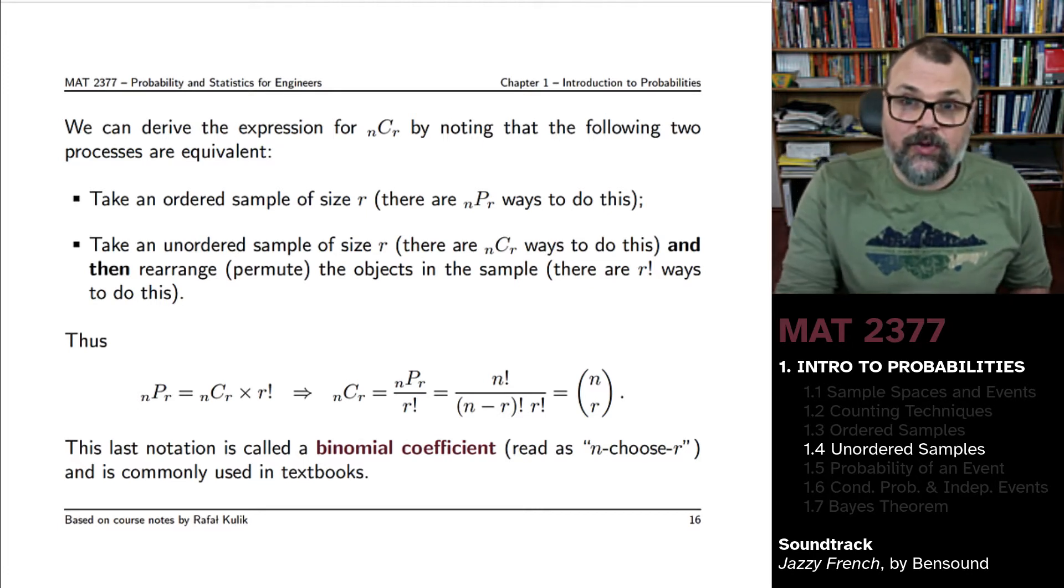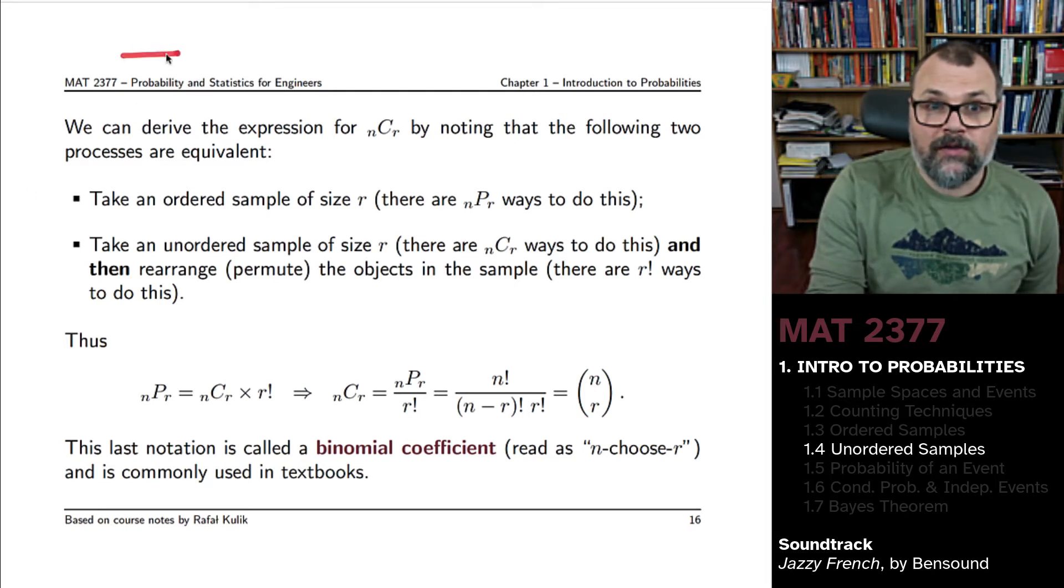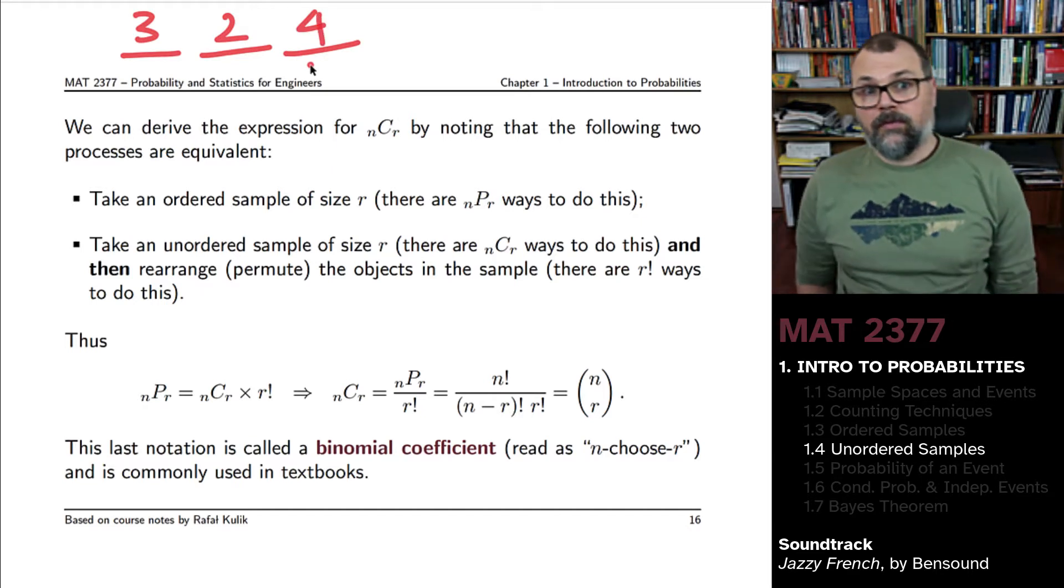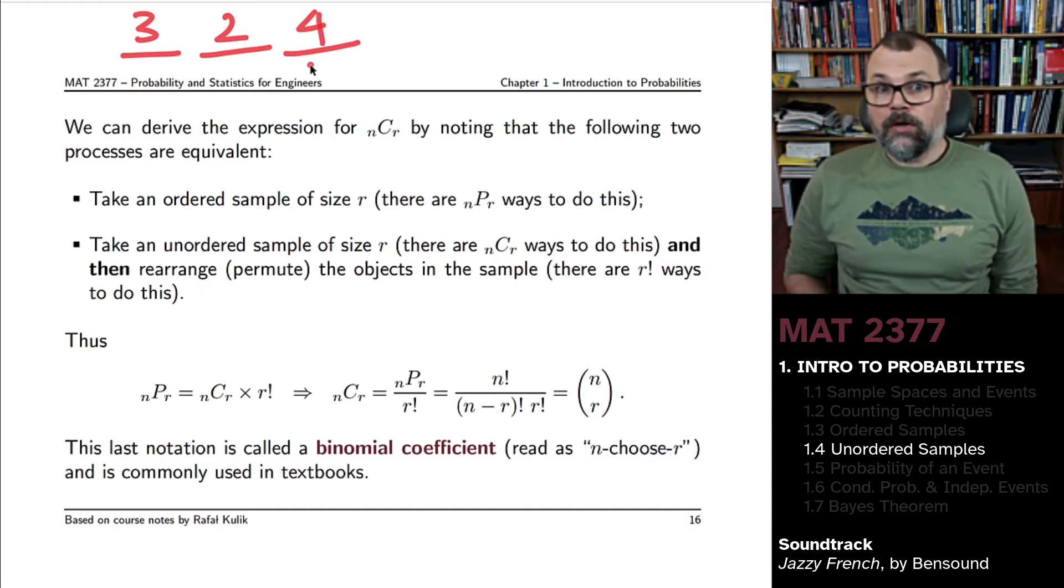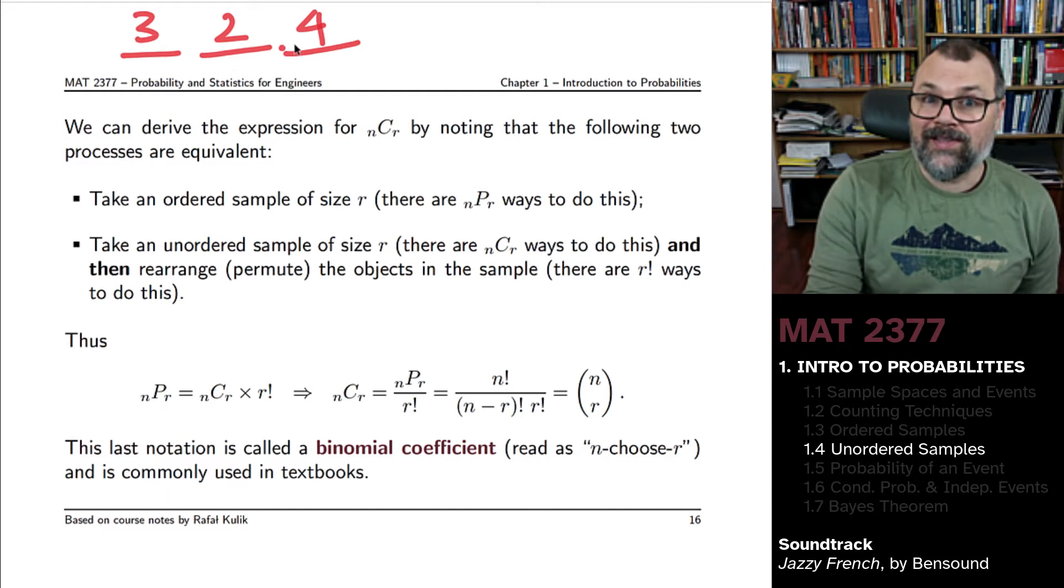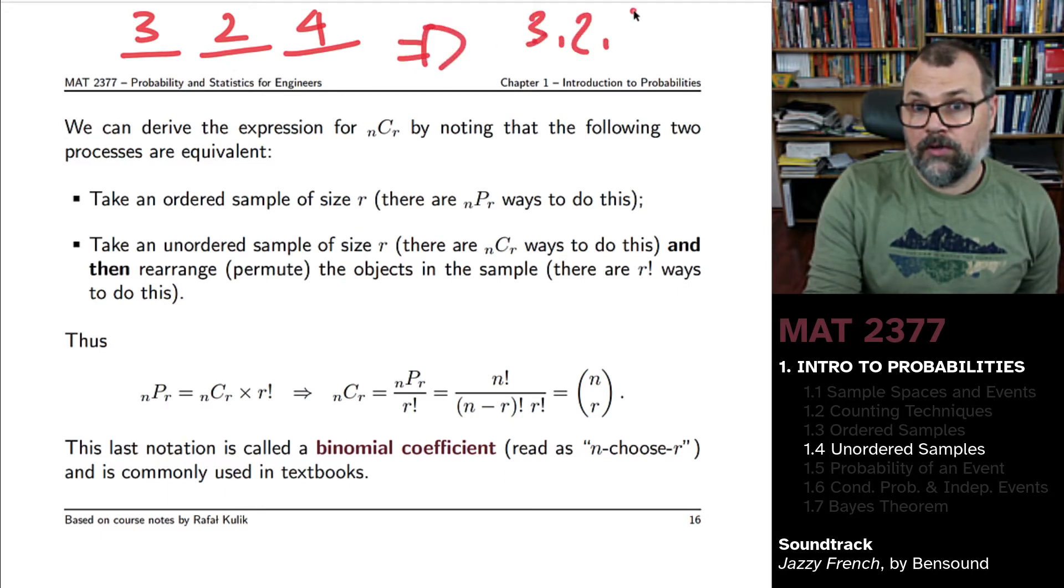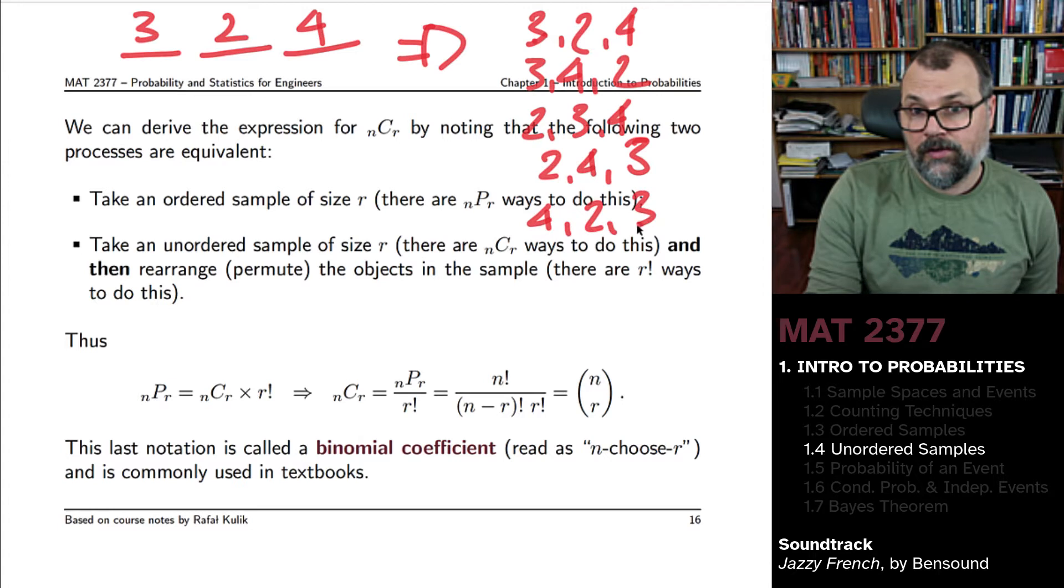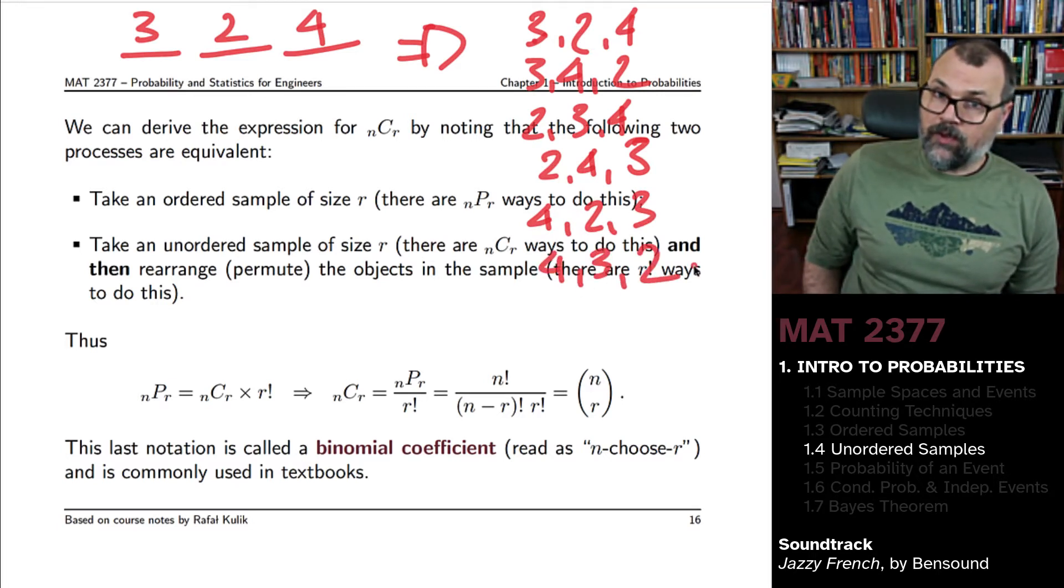For instance, what I mean is, let's say that you had drawn at some point 3-2-4. Well, how many different ways are there to rearrange this? You could have 3-2-4, 3-4-2. You could have 2-3-4, 2-4-3. You could have 4-2-3, 4-3-2. And that's it. There's no other way to be doing that.